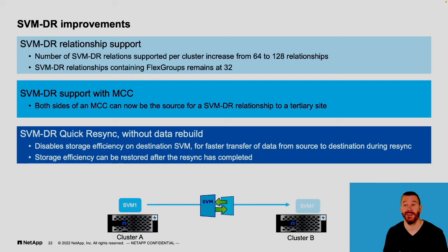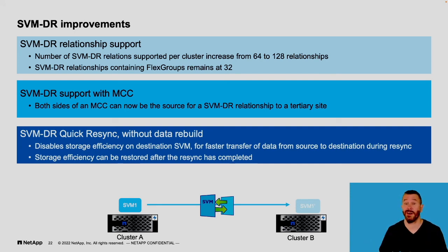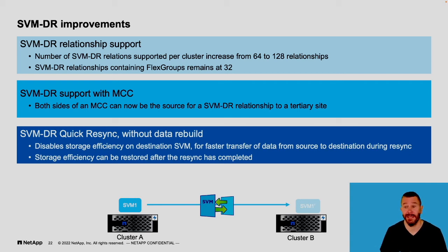With ONTAP 9.11.1, we've increased the number of SVMDR relationships from 64 to 128 — a massive increase. Now also in a MetroCluster environment, if you're using MetroCluster to give yourself business continuity and very low recovery time between two sites, either of those sites can also be the source for SVMDR to a third site, giving you a third-site recovery at infinite distance.